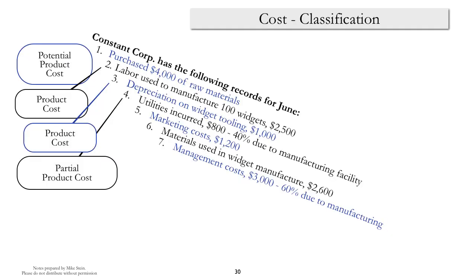Looking at number one, the purchase of raw materials — the purchase in and of itself doesn't really make something either a product cost or a period cost. It turns out that the really important factor is how a cost is used, so we'll put that one aside for a second. Number two, labor used to manufacture 100 widgets — the key here is that it's direct labor used in the manufacturing process, so that makes it a product cost.